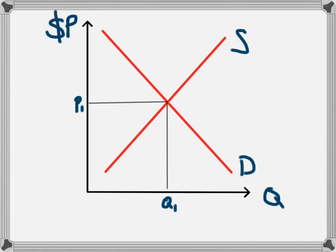The supply and demand for this product leads to an equilibrium price of P1 and an equilibrium quantity of Q1.